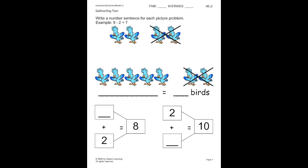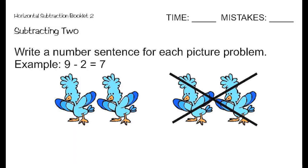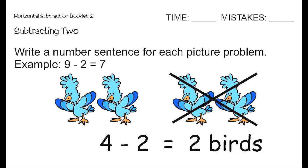Now, on page 5, we are going to work on picture problems. Let's first read the directions. They say: write a number sentence for each picture problem. On this first problem, we have 4 birds, and then we see that 2 flew away. So, we had 4 and now we're going to take away 2, so we're subtracting 2. So, 4 minus 2 equals 2. There are 2 birds left.